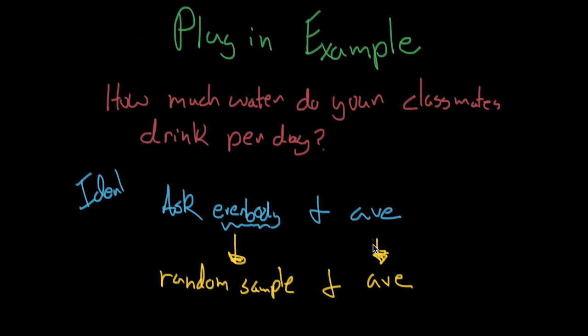The second question is: we take the average of that random sample. That makes sense, right? We're interested in knowing the average of everybody, so we should just take the average of the small sample of people that we actually talk to, right?